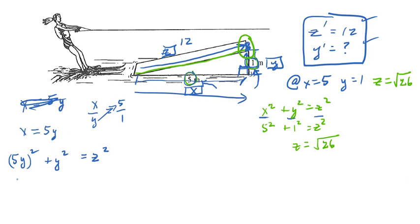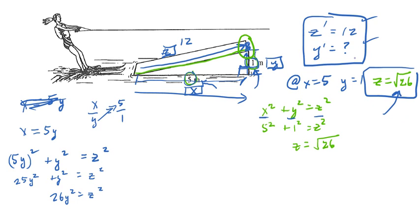So 5Y squared, of course, is 25Y squared. If we simplify, we have 26Y squared equals Z squared. Now that's huge — it's not an easy question. The first challenge is figuring out the specific point at which we're calculating the rate of change, and the second is reducing three variables down to an equation with just two. Those are the two big hurdles. Now we have this equation and we can differentiate it.